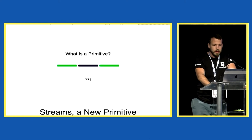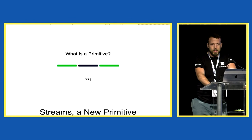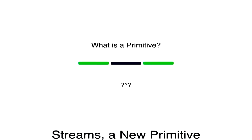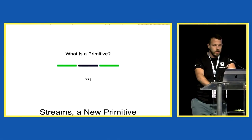So what is a primitive? A primitive is a basic piece of functionality which enables us to do other things with it. It might be useful in itself, but it's definitely useful in combination with other things. In crypto and DeFi we always talk about composability, about building blocks, about money Legos — combining different products to create new ones.